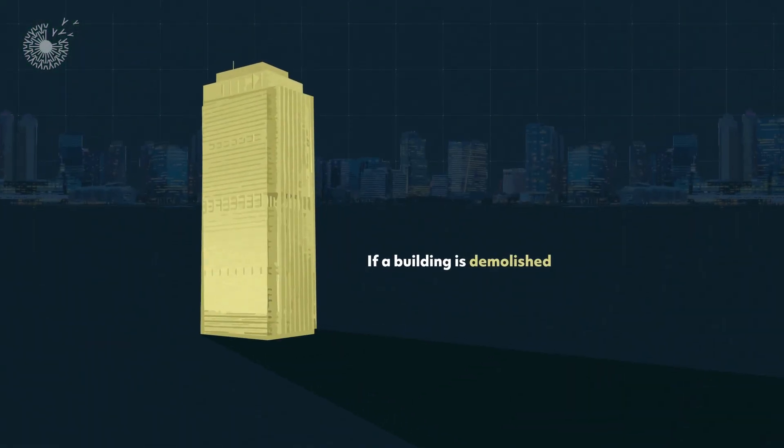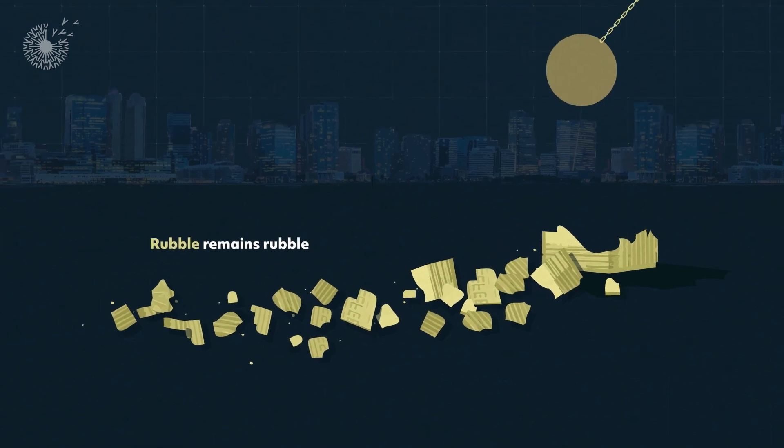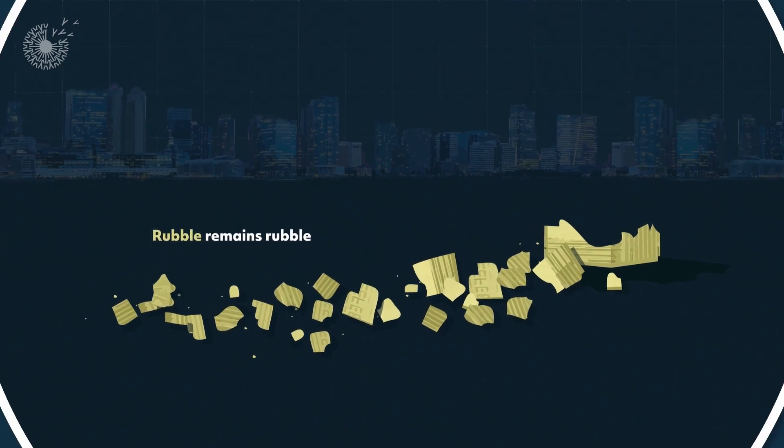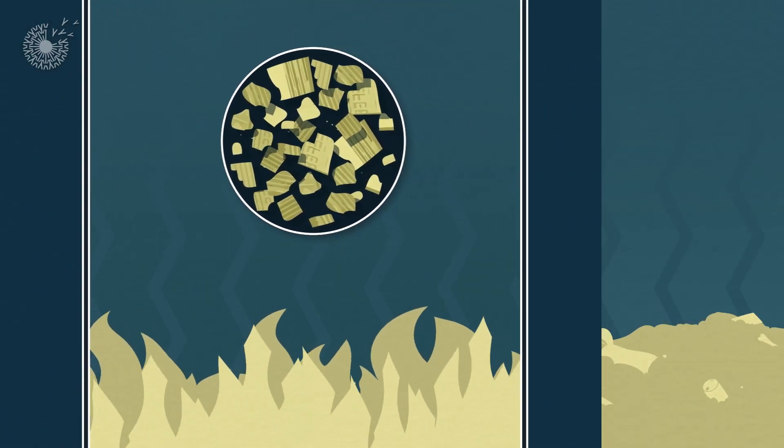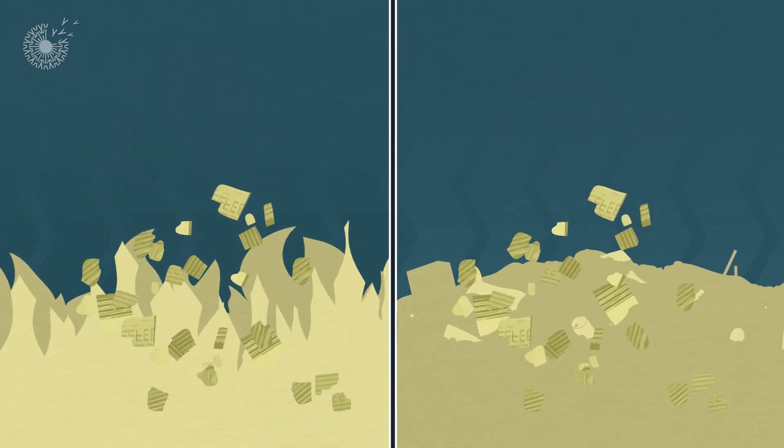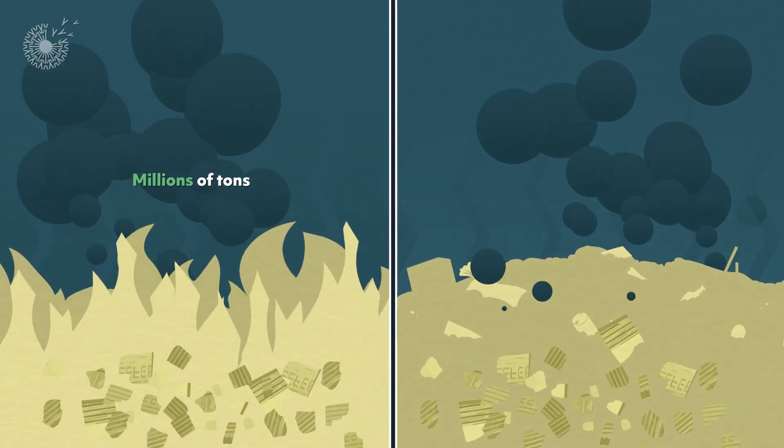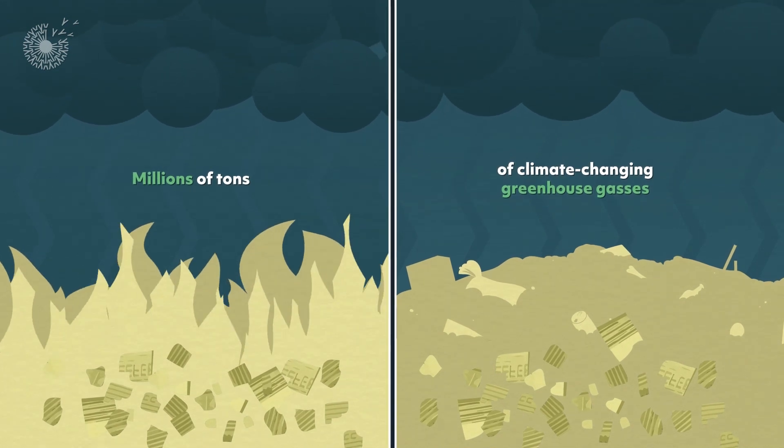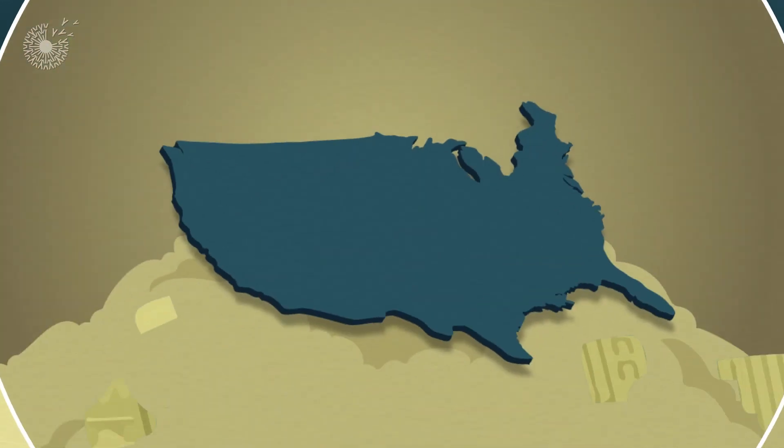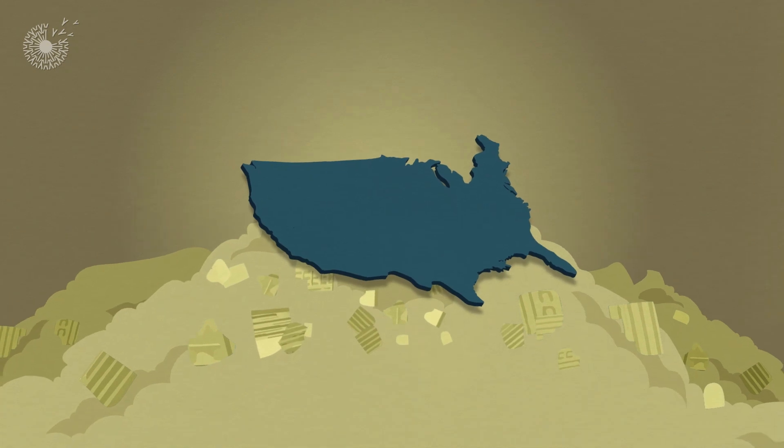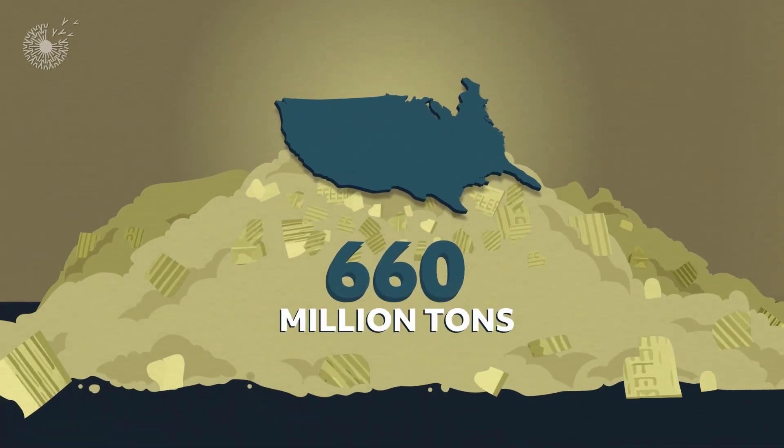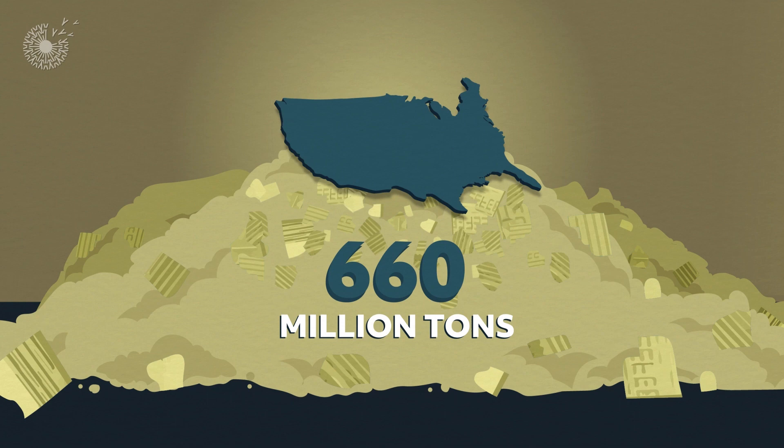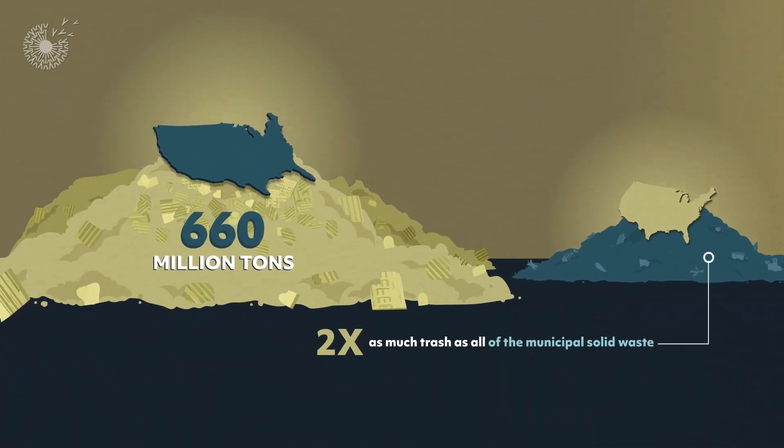Currently, if a building in a city is demolished, its rubble remains rubble, which gets incinerated or dumped in landfills, not only polluting the land, but adding millions of tons of climate-changing greenhouse gases to our atmosphere every year. The United States alone annually produces 660 million tons of construction and demolition debris. That's twice as much trash as all of the municipal solid waste that's collected.